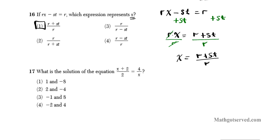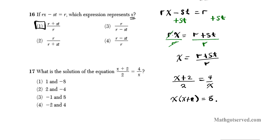Now let's shift our attention to question number 17. It says, what is the solution of the equation x plus 2 over 2 equals 4 over x? We'll use the property of equality here again. So we have (x+2)/2 = 4/x. Now what we're going to do is cross multiply — multiply the denominator by the numerator on each side. So when you cross multiply, you have x times (x+2) equals 8. Now distribute the left side: we'll have x squared plus 2x equals 8.